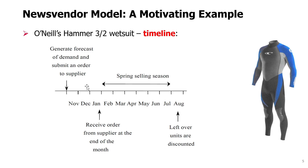Then O'Neill has to wait for three months. At the end of January, O'Neill receives the order from the supplier and the selling season begins. For six months O'Neill will be selling this product, and then sometime in August the leftover units in inventory will have to be disposed of — for example, by selling them at a discount in-store or selling them to another store at a much lower price.